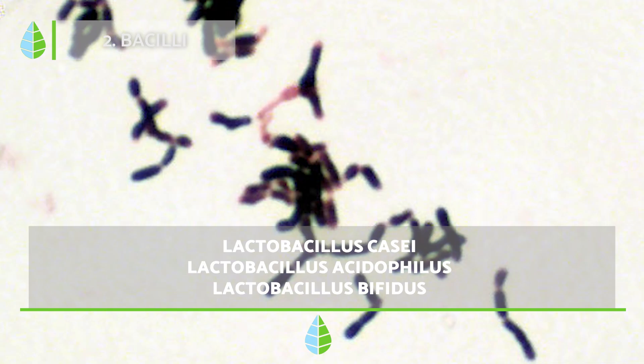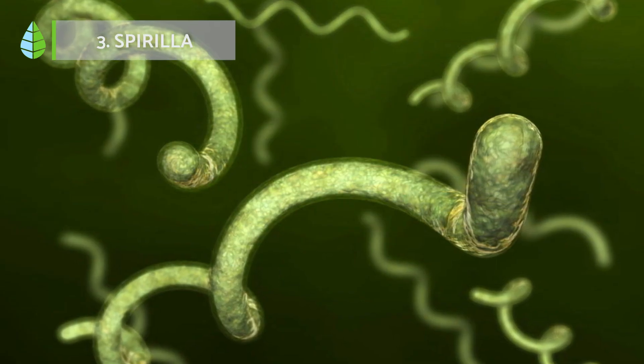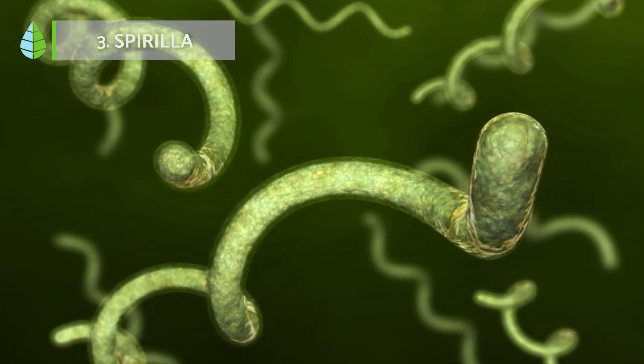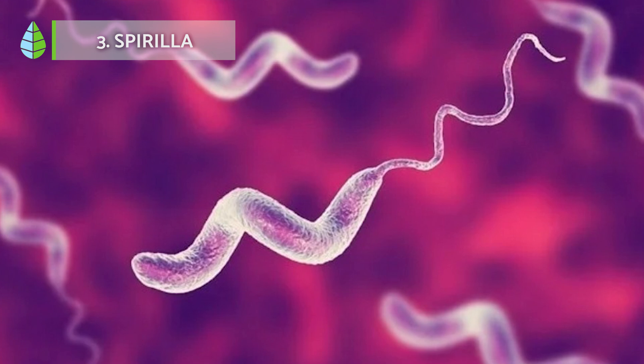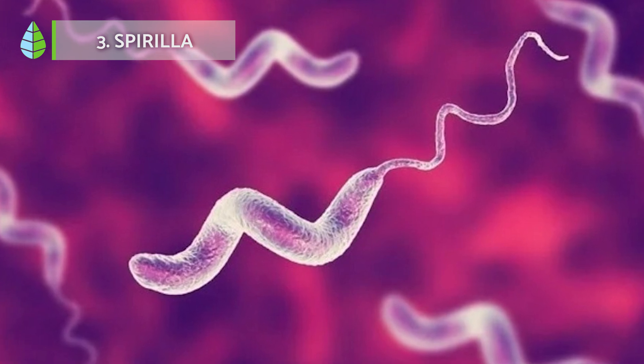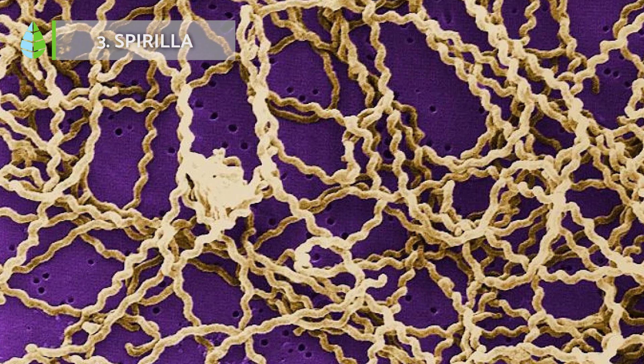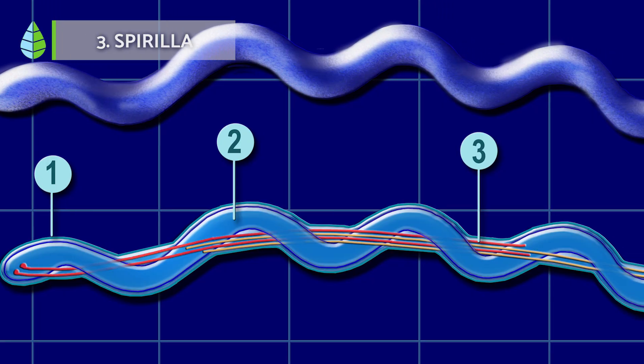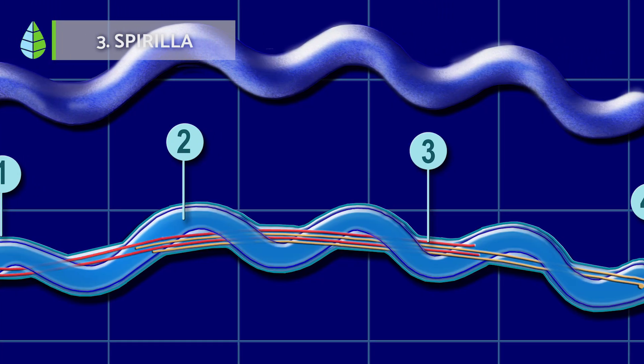These bacteria play a crucial role in promoting gut health and aiding in digestion. Spirilla are bacteria with a distinctive spiral shape, easily seen under a microscope. They can be classified based on the number of twists and the structure of their spirals — a spirillum can have a helical shape with a rigid structure, or a corkscrew shape with a more flexible structure, the latter being typical of spirochete bacteria.